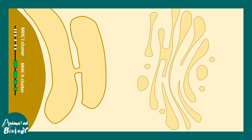Our focus is class 1 MHC molecule presentation in this video. Here is a normal nucleated cell which would have MHC 1 and MHC 2 clusters in its genome. The MHC 1 cluster would be expressed, giving rise to the MHC class 1 molecule components. These would be translated onto the rough endoplasmic reticulum, and the protein would enter the endoplasmic reticulum. At this point the MHC class 1 molecule is basically in an unfolded state — what you're looking at is the class 1 MHC molecule alpha chain, which would eventually be folded.